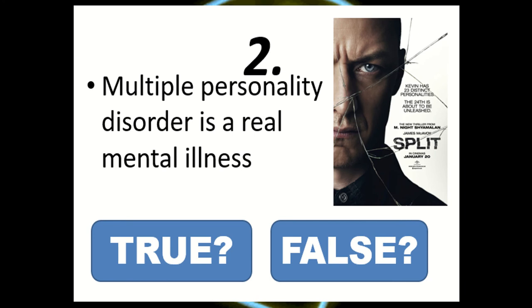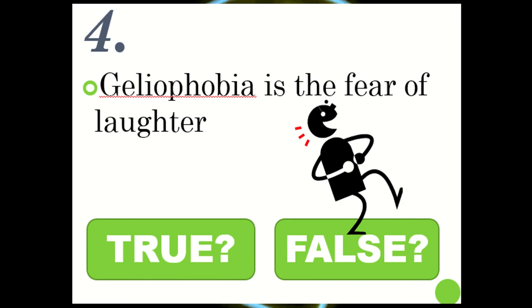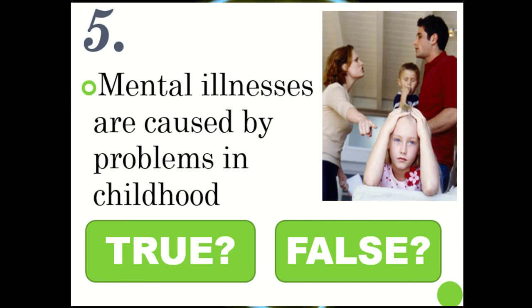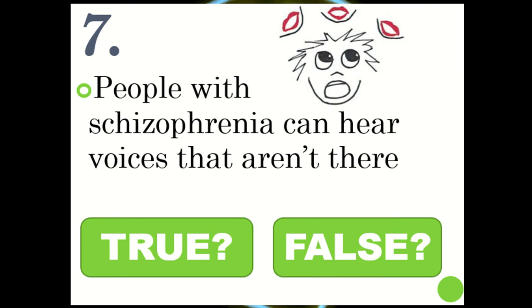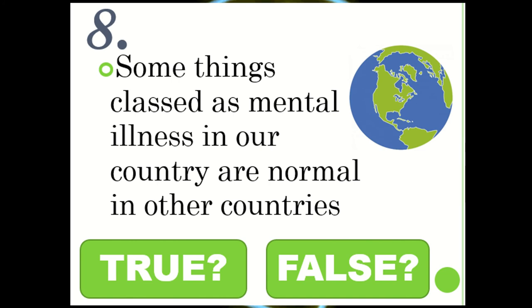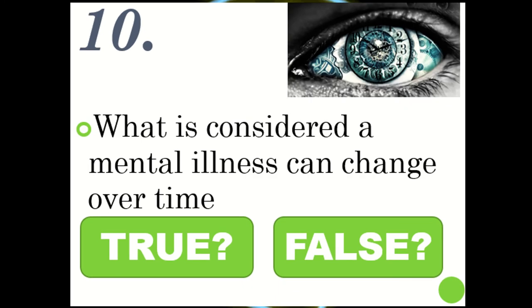2. Multiple personality disorder is a real mental illness. 3. Mental illnesses can be treated with medication. 4. Geliophobia is the fear of laughter. 5. Mental illnesses are caused by problems in childhood. 6. Mental illnesses often run in families. 7. People with schizophrenia can hear voices that aren't there. 8. Some things classed as mental illness in our country are normal in other countries. 9. Serial killers all have mental illnesses. 10. What is considered a mental illness can change over time.